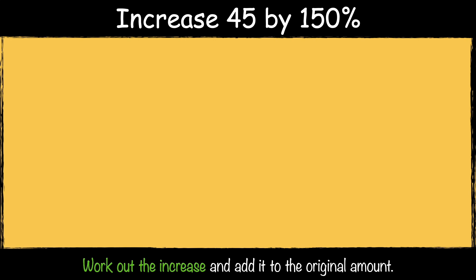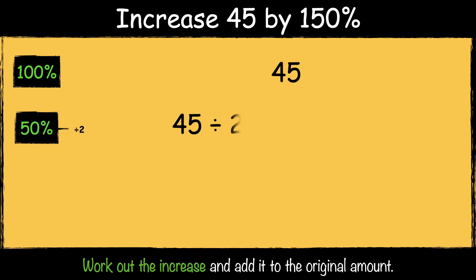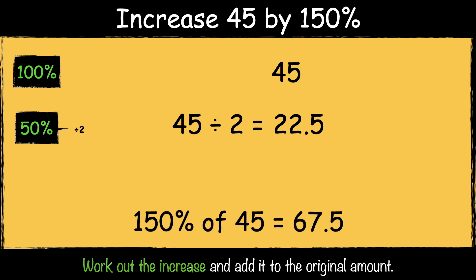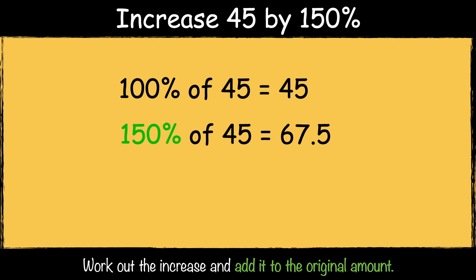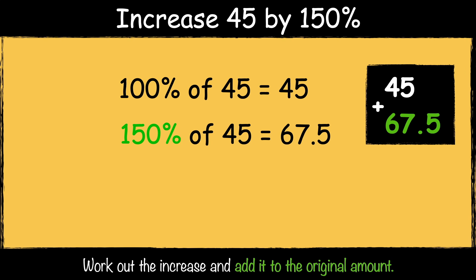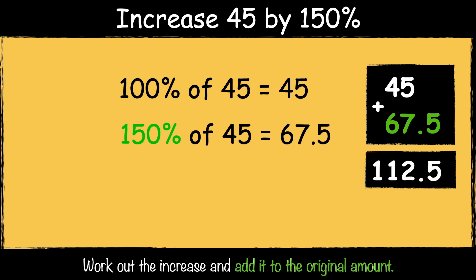Here's another example: increase 45 by 150%. We already know that 100% of 45 is 45. To find 50% of a number we divide it by 2. 45 divided by 2 is 22.5. So 150% of 45 is 67.5. The next step is to add it to the original amount, so 45 add 67.5 is 112.5.